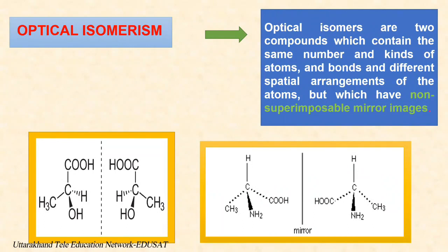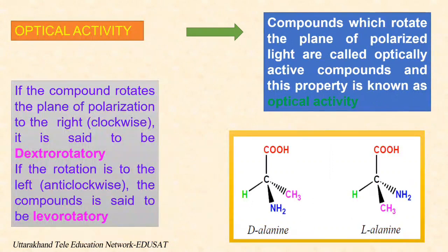Optical isomerism is a case where the isomers display identical characteristics in terms of molecular weight as well as chemical and physical properties. However, they differ in their effect on the rotation of polarized light. Optical isomerism occurs mainly in substances that have the same molecular and structural formula but cannot be superimposed on each other — in simple words, they are mirror images of each other. It can also be found in substances that have an asymmetric carbon atom. Optical activity: a property of a compound being able to rotate the plane of polarization of plane-polarized light is called optical activity. The compound with such activity is labeled as optically active. The direction and angle of rotation depend on the nature and concentration of the chiral substance.